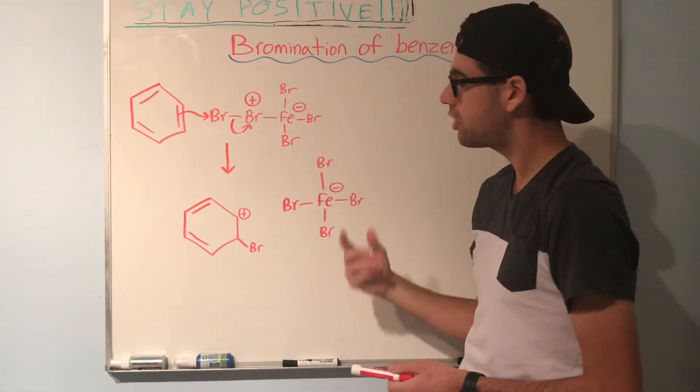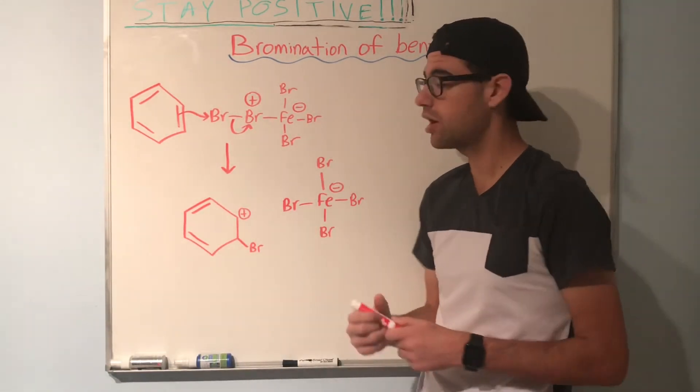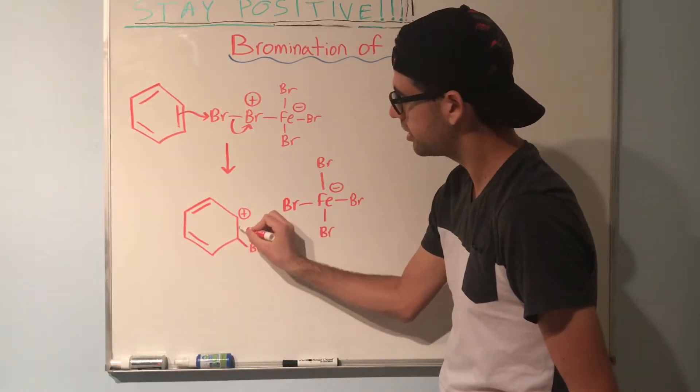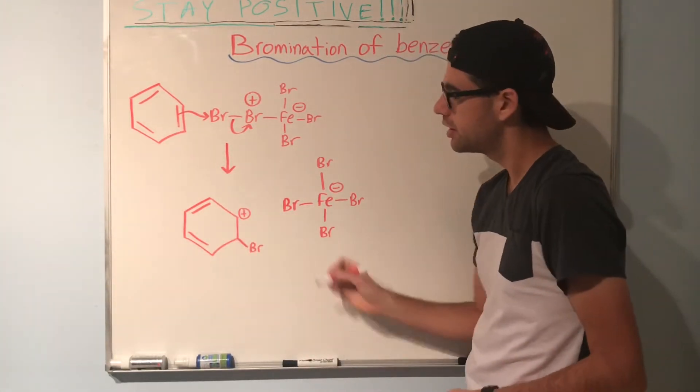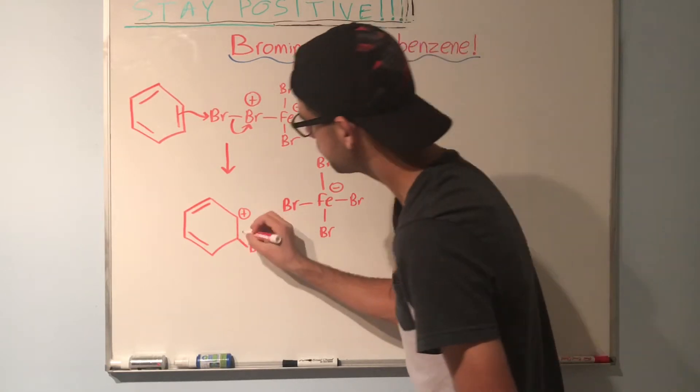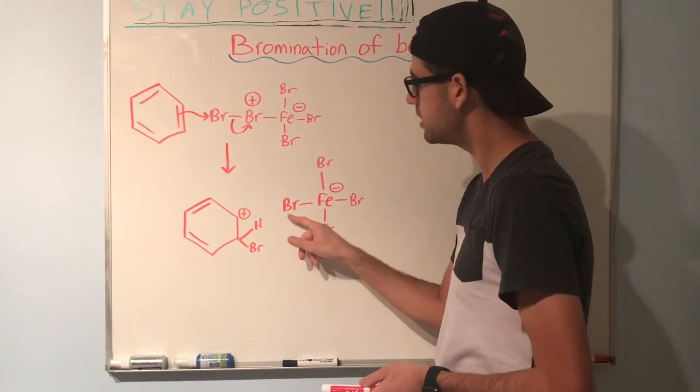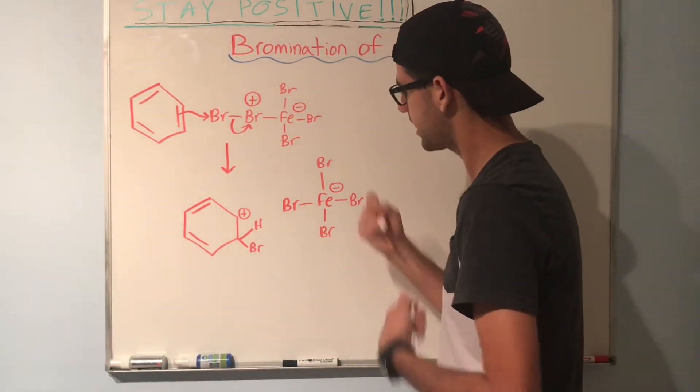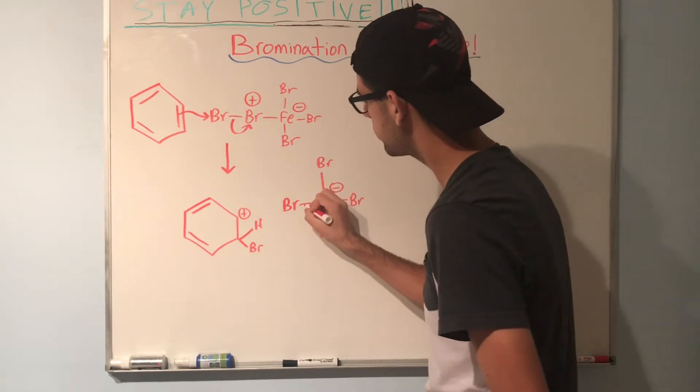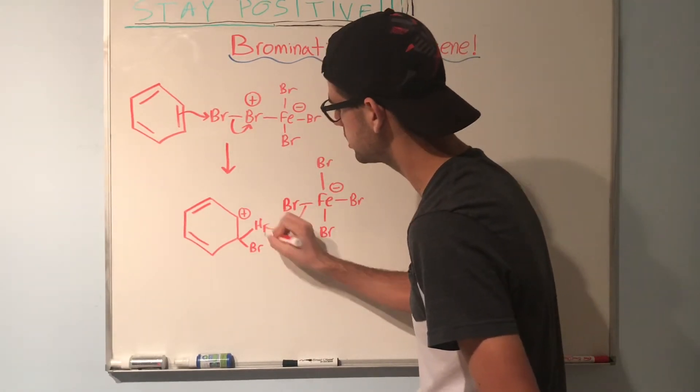Also remember that there are some hidden hydrogens that we didn't draw in. There's a hydrogen on this carbon, on this one—all of them have a hidden hydrogen. I'm going to draw in this one right here. What will happen is this Br is going to break away from the catalyst and use those electrons to nab this hydrogen, to deprotonate it.